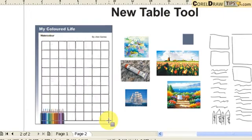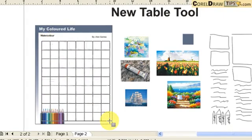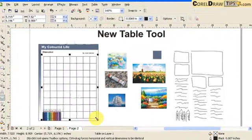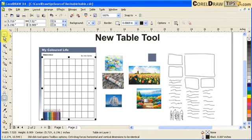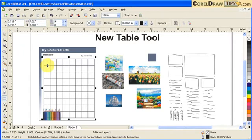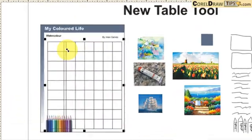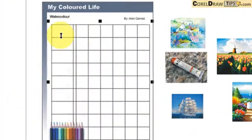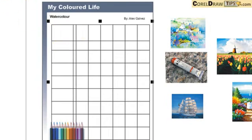We are going to make nine rows and eight columns. Click and drag to draw the table. Now if you double-click on the table, you can access all the rows and adjust them.